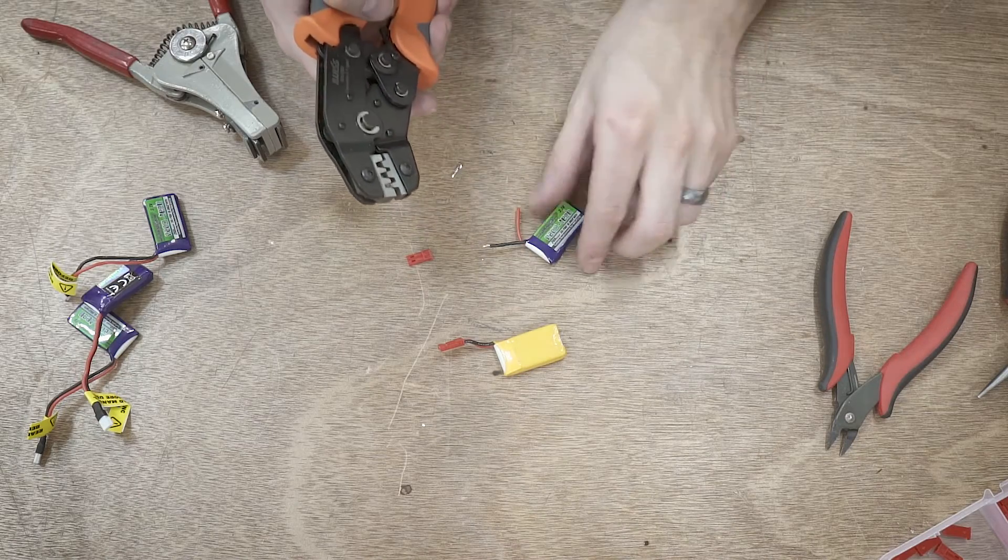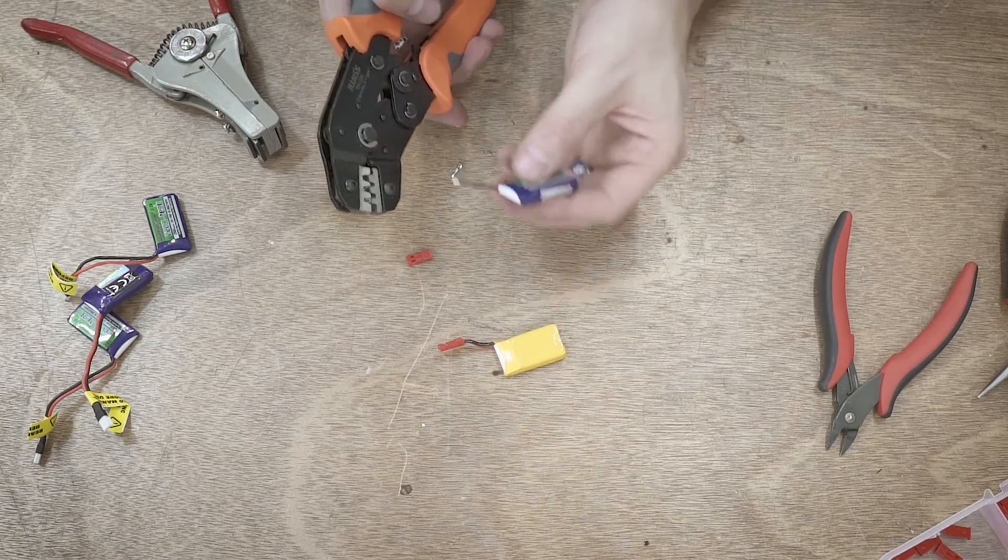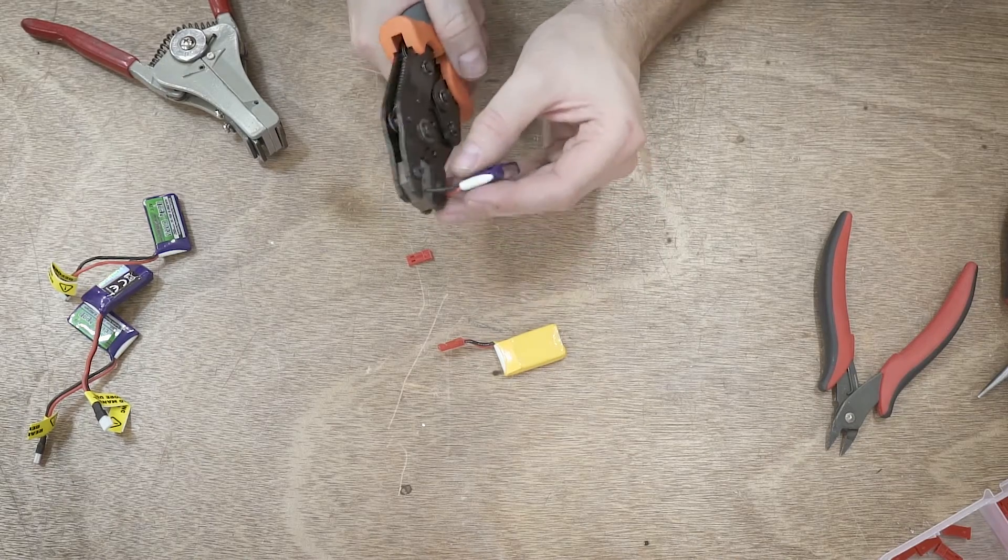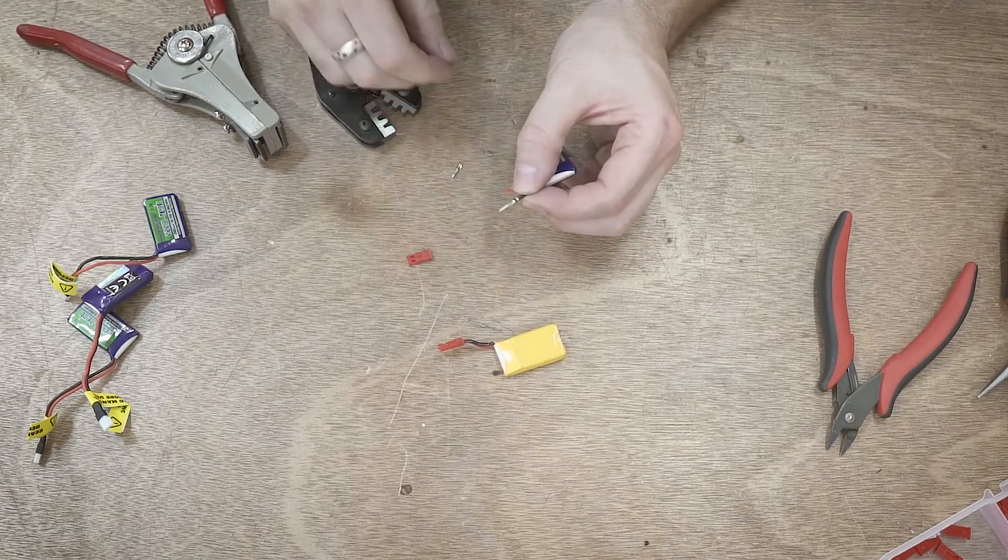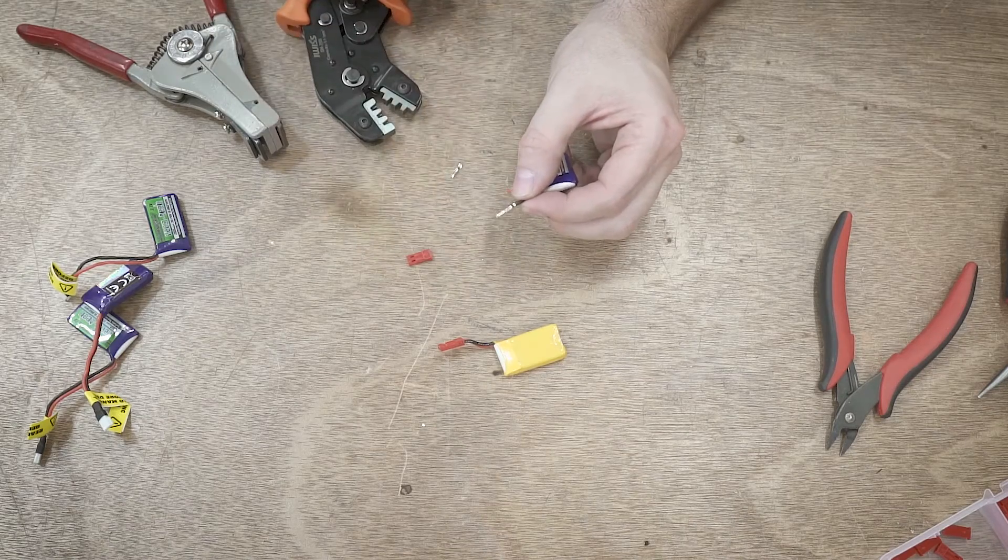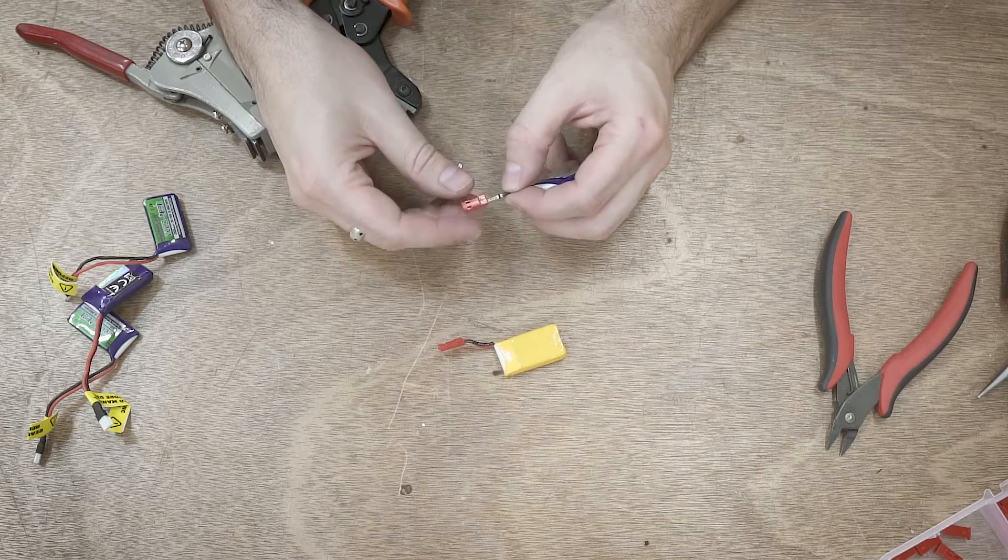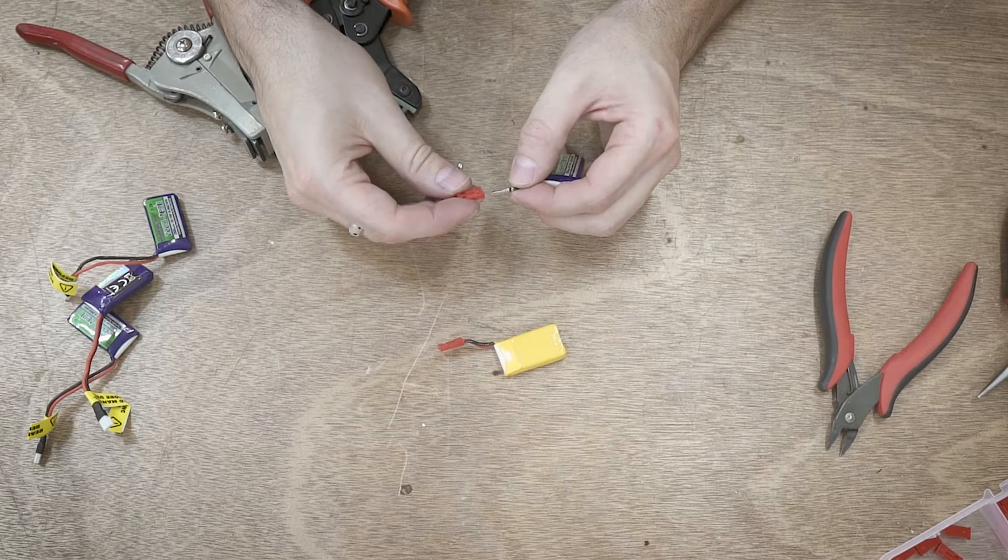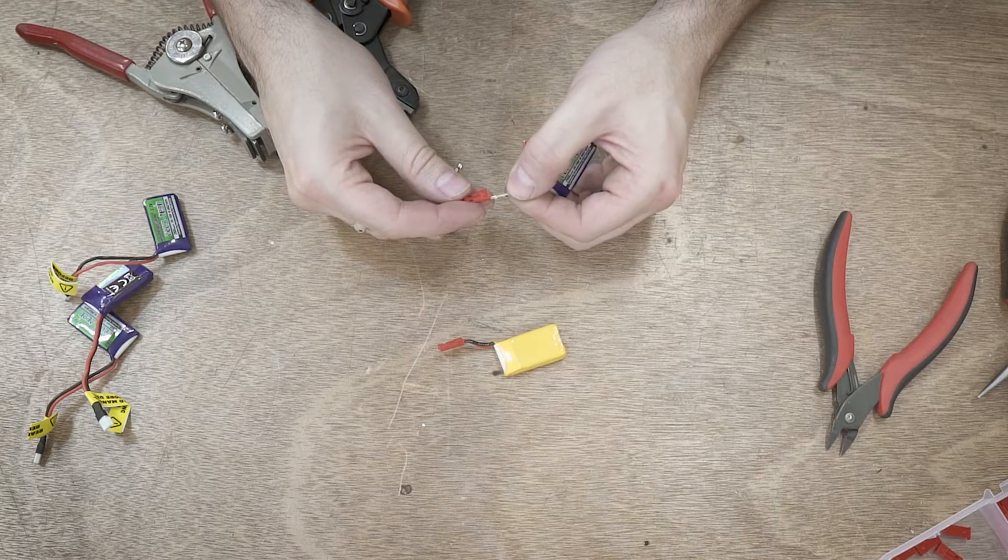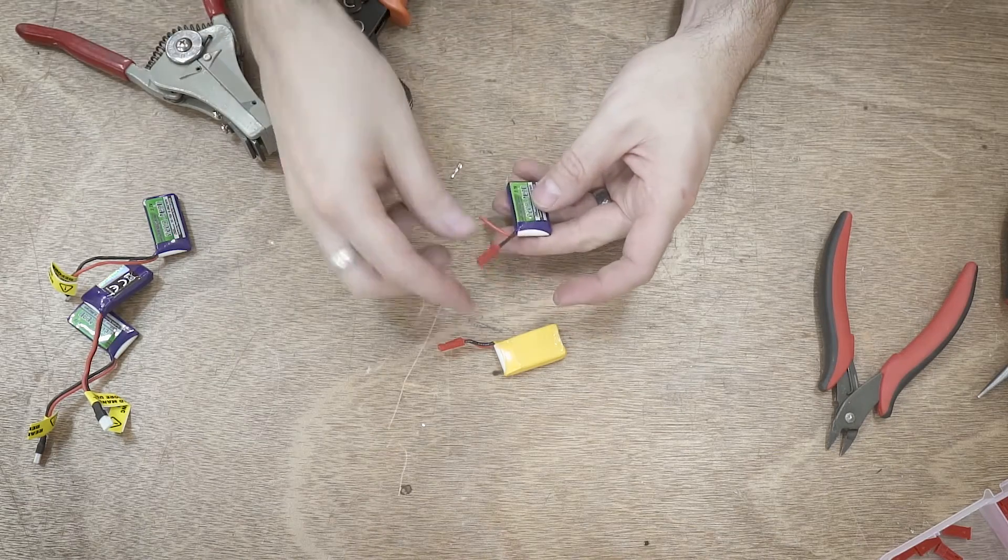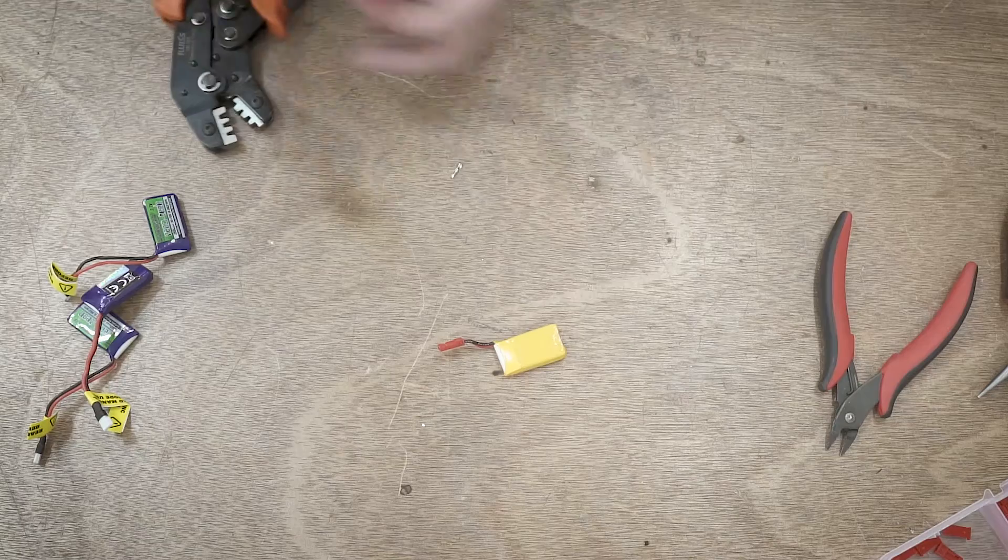Every crimper is going to be a little bit different, but for these guys, I use this furthest one out. I kind of get it in there like that, half latched into place, feed in my wire. There you go. That's all there is to it. You can see it's nice and crimped down. Then we're just going to insert this into the little sleeve. That's all there is to it.